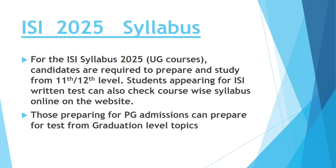ISI Syllabus 2025: For UG courses, candidates are required to prepare from 11th and 12th level topics. Students can also check the course-wise syllabus online on the website. Those preparing for PG admissions should prepare from graduation-level topics.